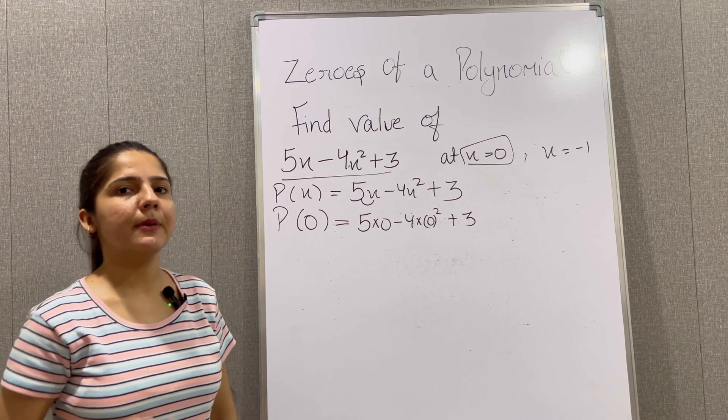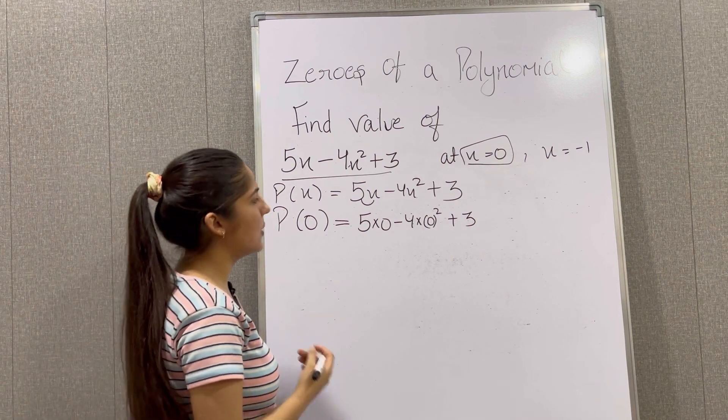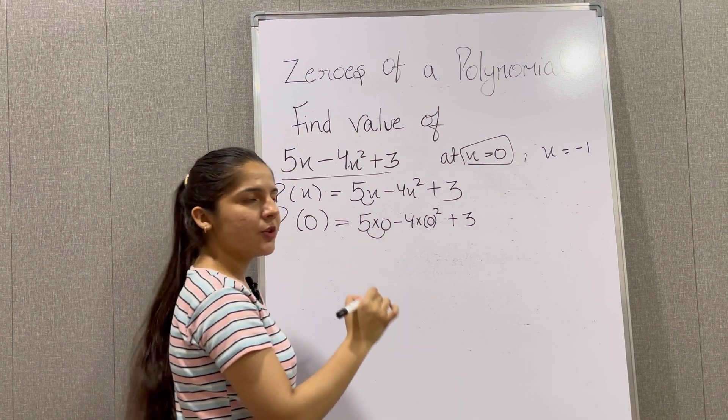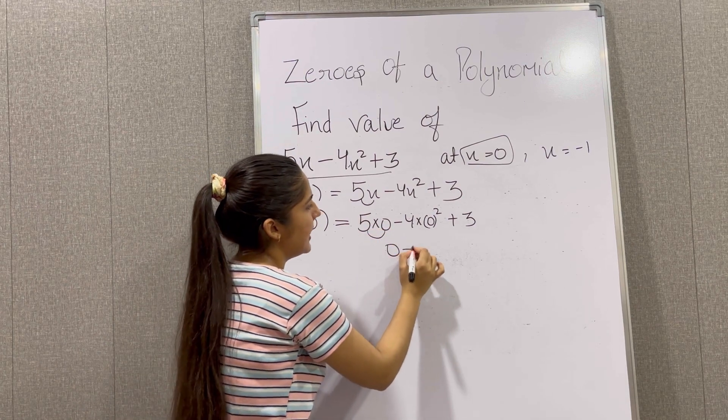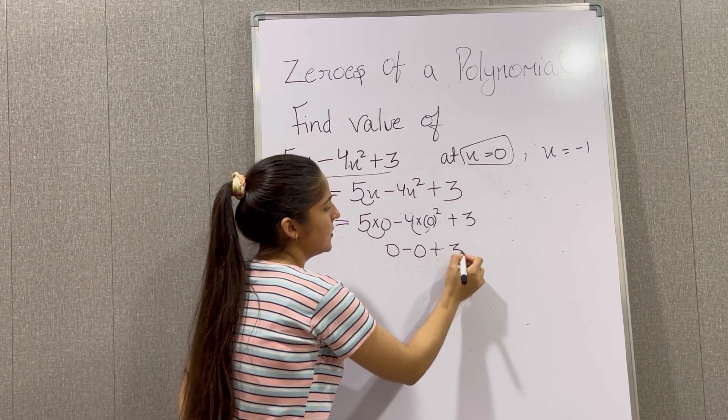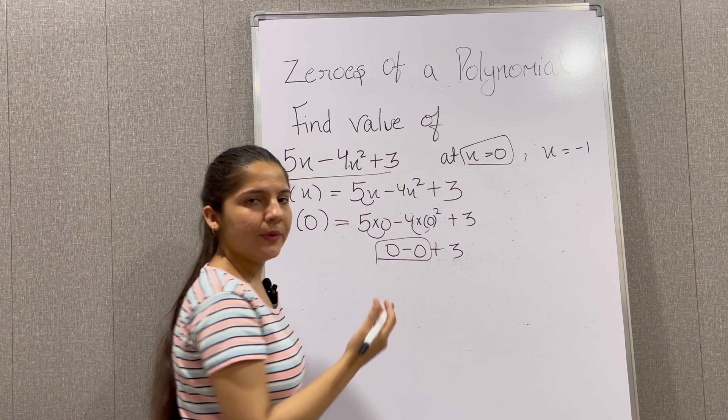Now whenever we multiply a number with 0 our answer is always 0. So 5 multiplied by 0 gives us 0, minus 4 multiplied with 0 gives us 0, plus 3. So these are cancelled out.